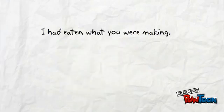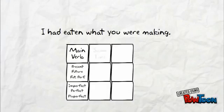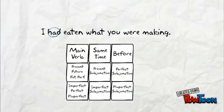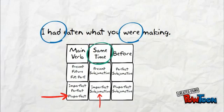Let's look at another one. Again, we start with the tense of the main verb. Then, we'll decide if the second verb happens at the same time as or before the main verb. 'I had eaten' is in the pluperfect tense. Because 'you were making' is ongoing in the past, we can assume it happens at the same time as the main verb. Thus, we would use the Latin imperfect subjunctive.